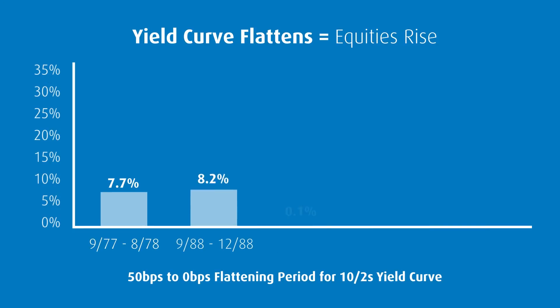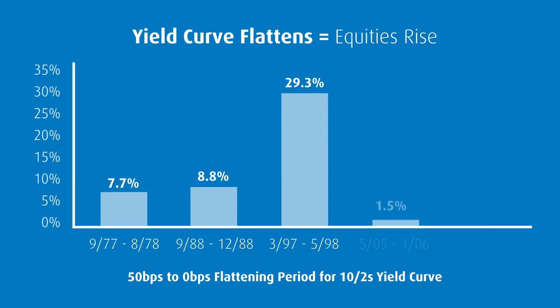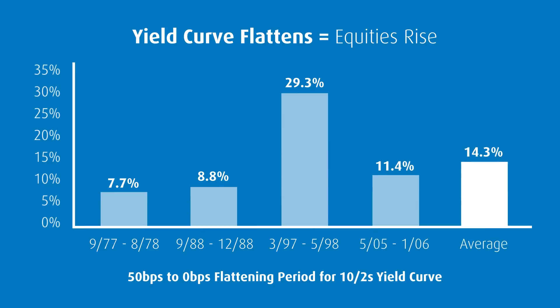What exactly is an inverted yield curve and why is there so much negative attention on it? Yield curve inversions occur when longer-term yields, generally defined by 10-year Treasury yields, fall below shorter-term yields, generally defined by 2-year Treasury yields. Traditionally, this phenomenon has been considered a harbinger for economic contractions, as the vast majority of U.S. recessions have been preceded by an inverted yield curve.